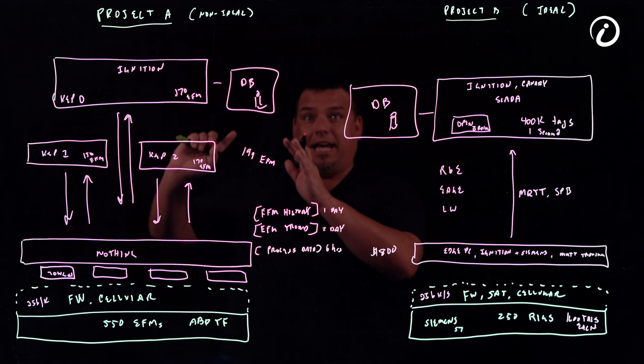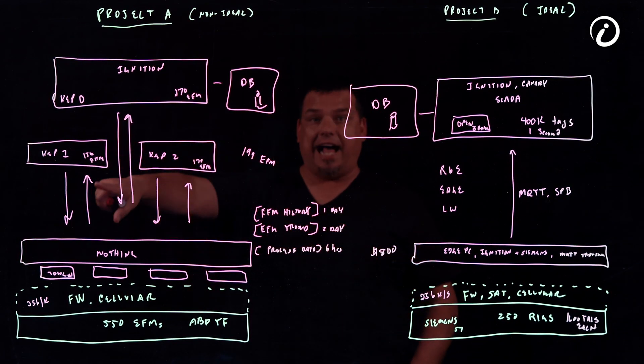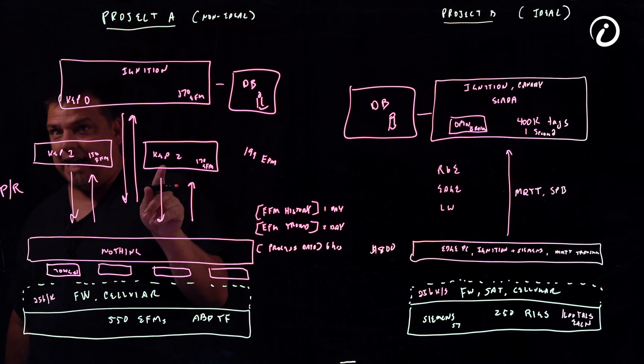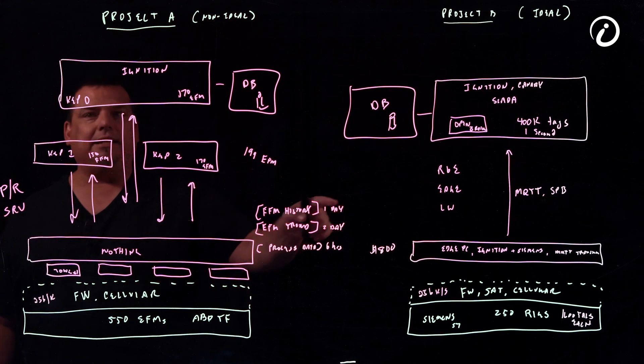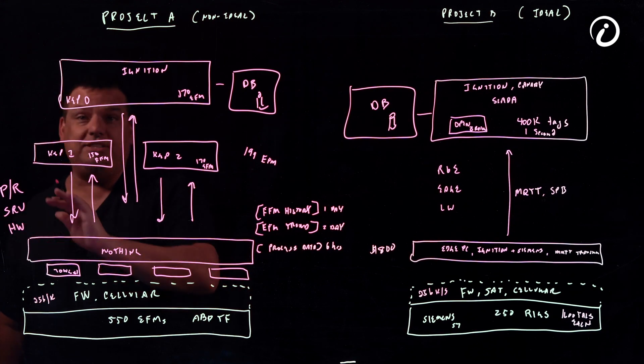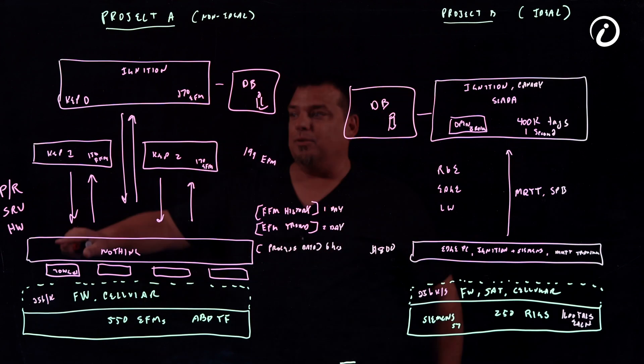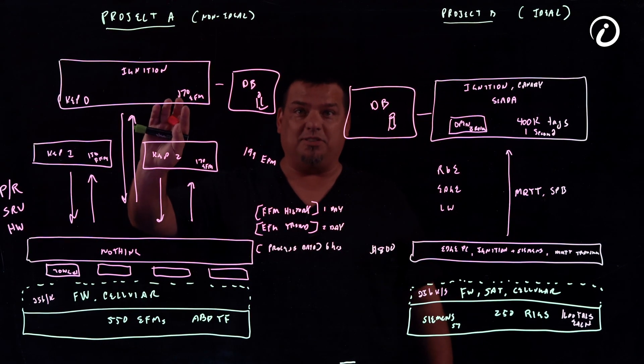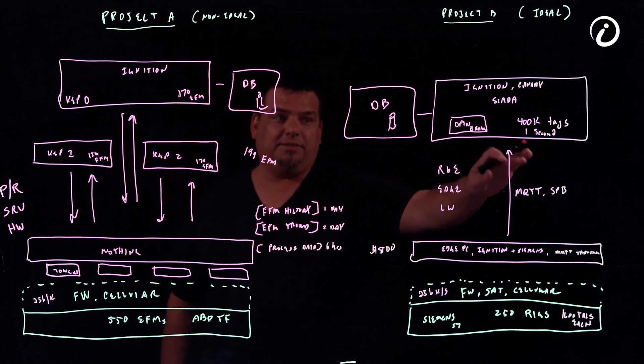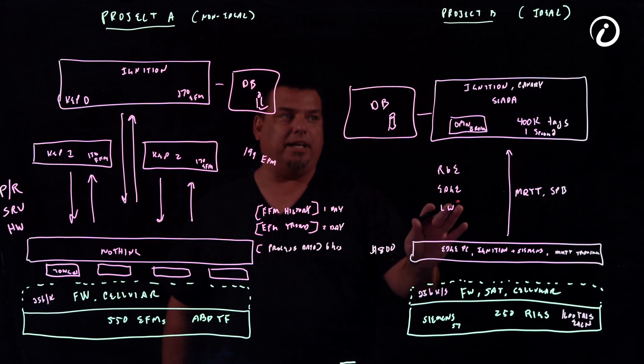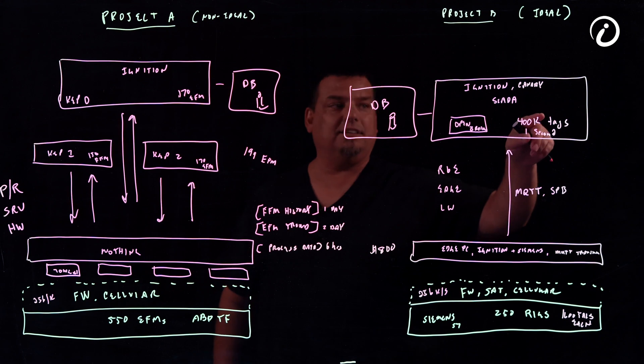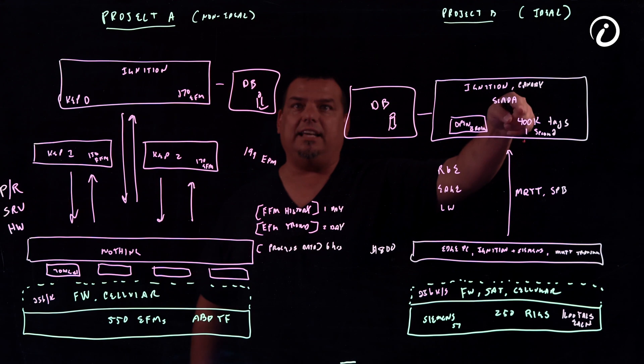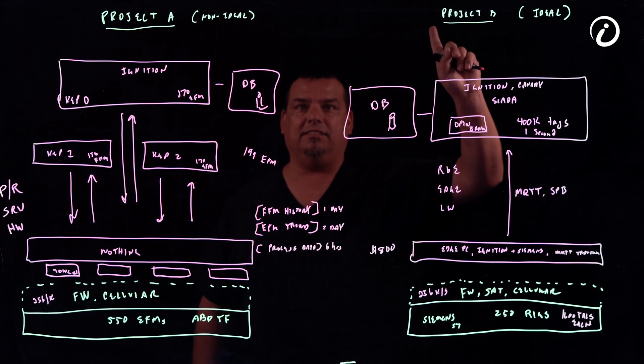All right so on the one side we have the Industry 3.0. This is not report by exception. This is poll response. It is not edge driven. It's server driven and it's not lightweight. It's heavyweight. Why is it heavyweight? It's using OPC. Why is it server driven? It's using OPC. And why is it poll response? Because it's using an OPC server. This is report by exception. This is edge driven and this is lightweight. I have 400,000 tags here at one second interval. So that is when a value changes it is updated in this server one second later. No matter what.